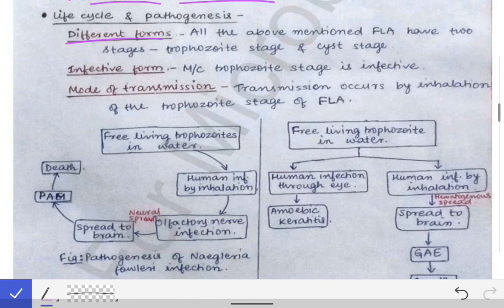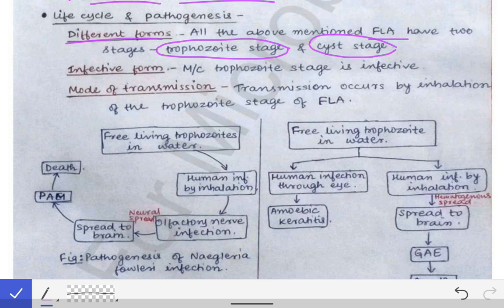All four of the mentioned free-living amoebas exist in two stages: the trophozoite stage and the cyst stage. The infective form is the trophozoite stage, similar to other parasitic infections. The mode of transmission is by inhalation of the trophozoite stage of the free-living amoeba — inhaling the trophozoites leads to free-living amoeba infection.